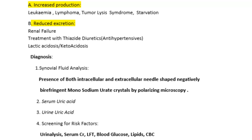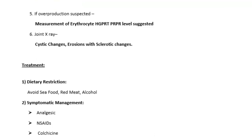Uric acid is also measured. If it is increased, screening tests are performed. Screening tests commonly used in case of gout include CBC, urinalysis, LFT, urea, creatinine, and in some cases thyroid levels.